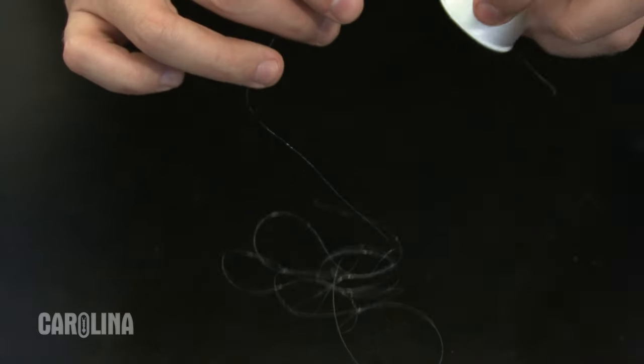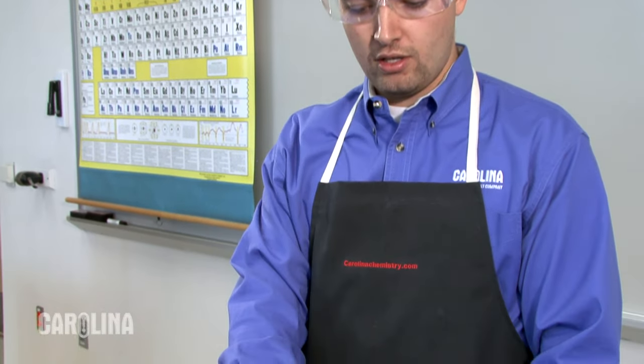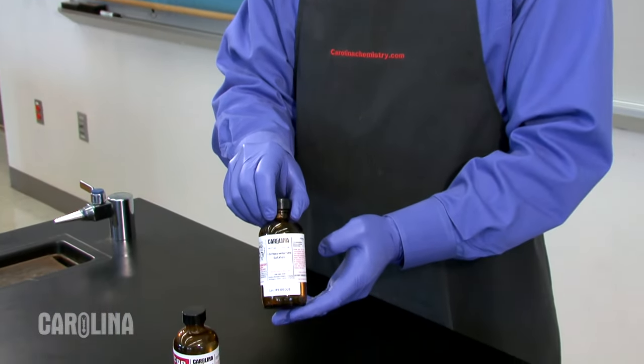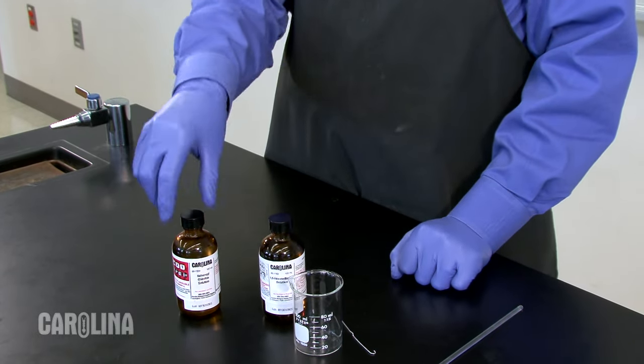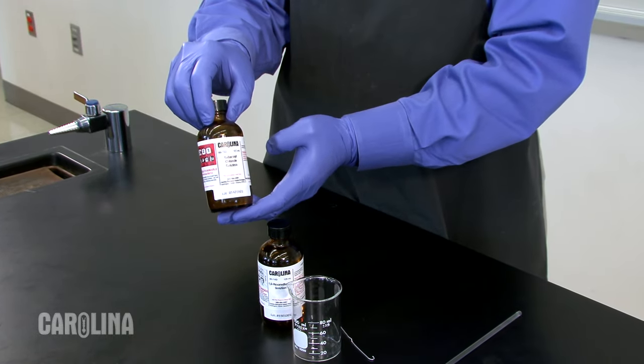Another very common polymer is nylon. In this experiment, we'll combine our diamine, 1,6-hexanediamine, with sebacoyl chloride, a substituted dicarboxylic acid.